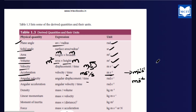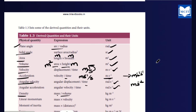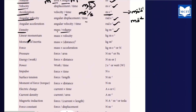Acceleration is velocity divided by time — velocity is m·s⁻¹ divided by time in seconds, giving m·s⁻¹ × s⁻¹, so minus 1 plus minus 1 gives m·s⁻².